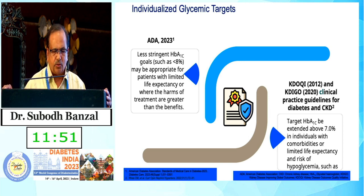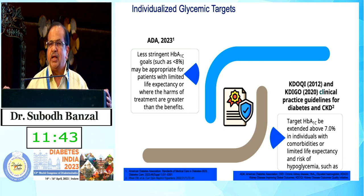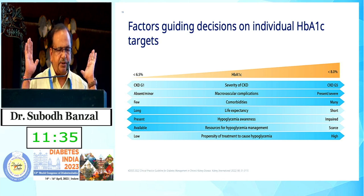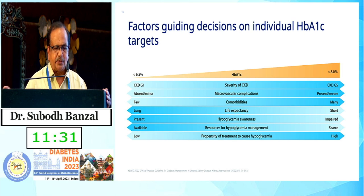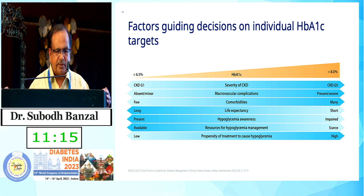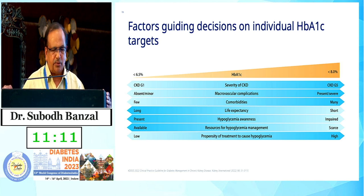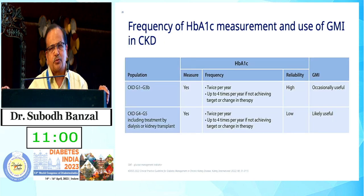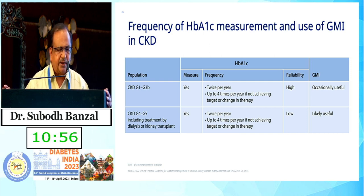KDIGO targets: A1C should be 7 for individuals with no comorbidity and younger patients. For older patients with comorbidities, relax the target to 8 or 8.5. Depending on severity of CKD, macrovascular complications, comorbidities, life expectancy, and hypoglycemia unawareness, A1C can be kept between less than 6.5 to 8. If patients have recurrent hypoglycemia or limited life expectancy, don't aim for tight control.